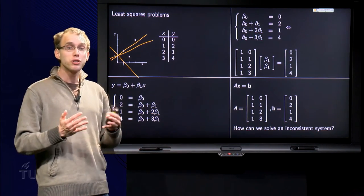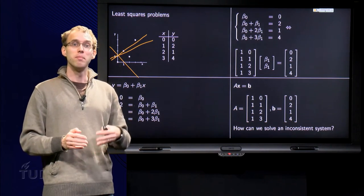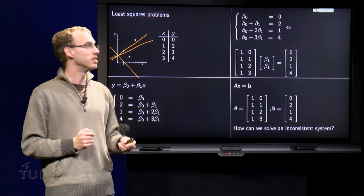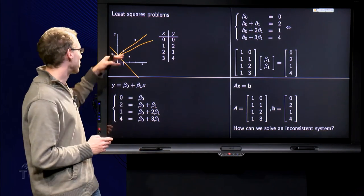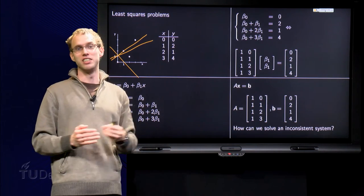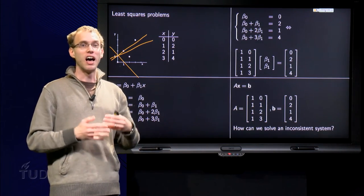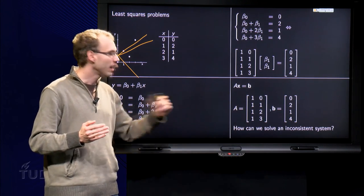However, we also already know that this system will be inconsistent, because if the system were consistent, all four points would be exactly on the line, and as you can see this is not going to happen. So we have now an inconsistent system, and the question is how can we solve in some way an inconsistent system?